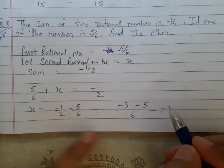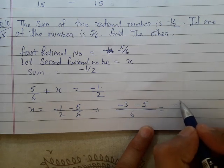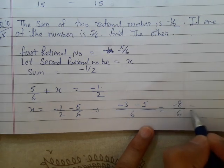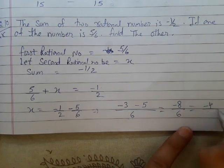I will add the numerator. It will become minus 3 minus 5 equals minus 8 upon 6. I can simplify it, cut it by 2. I will get minus 4 upon 3.